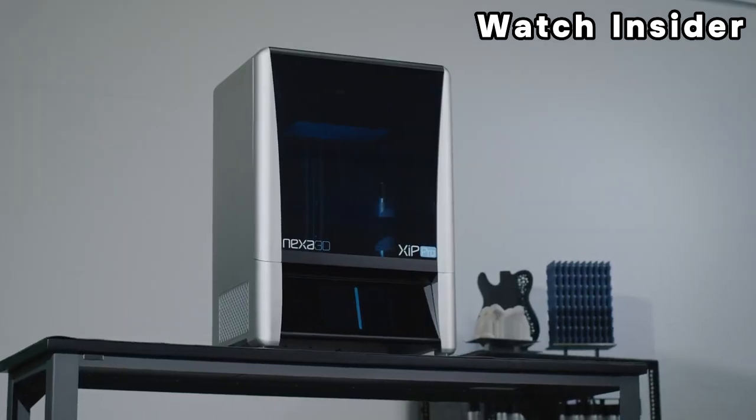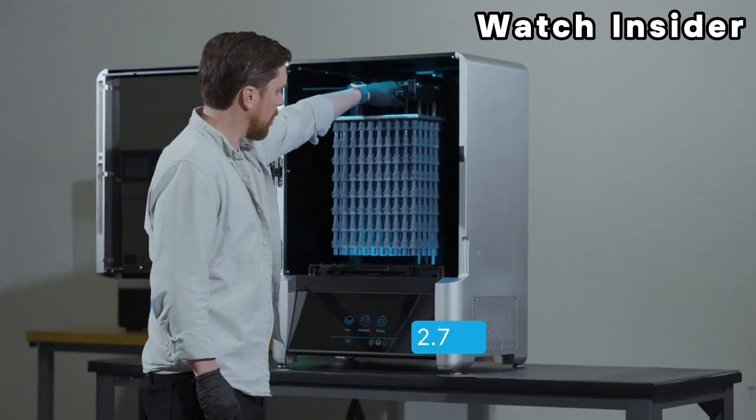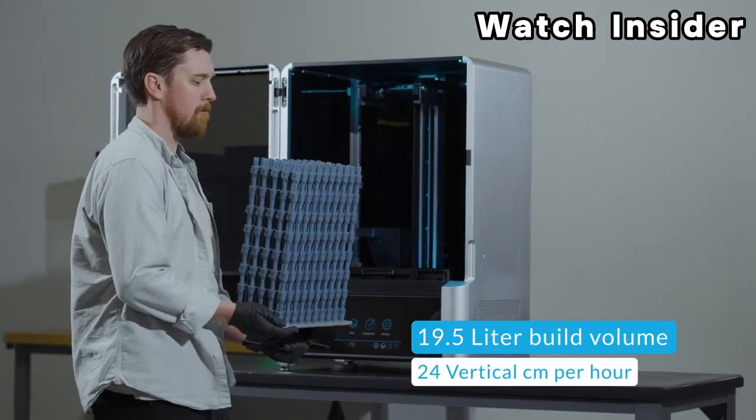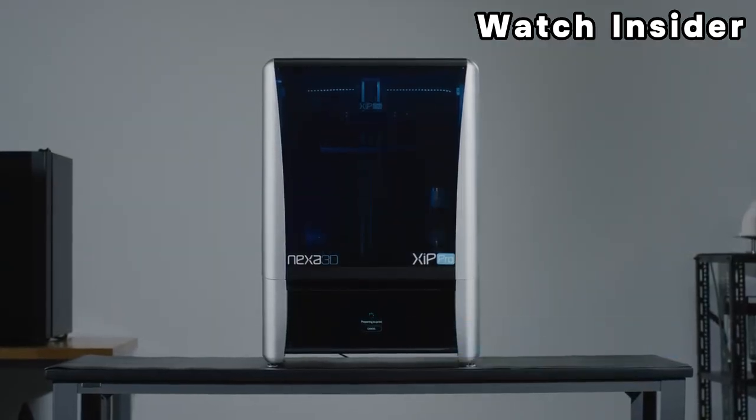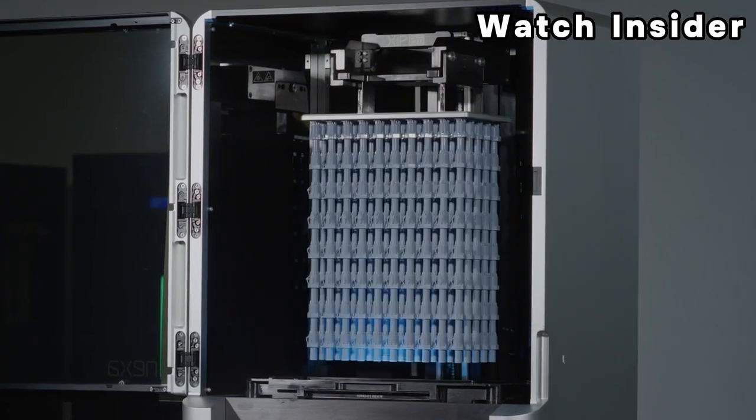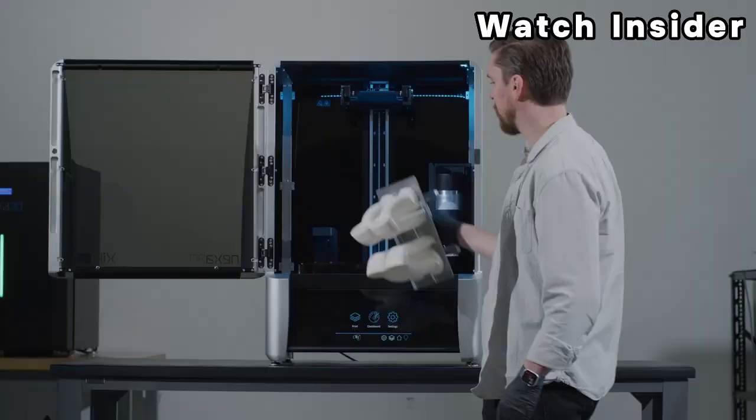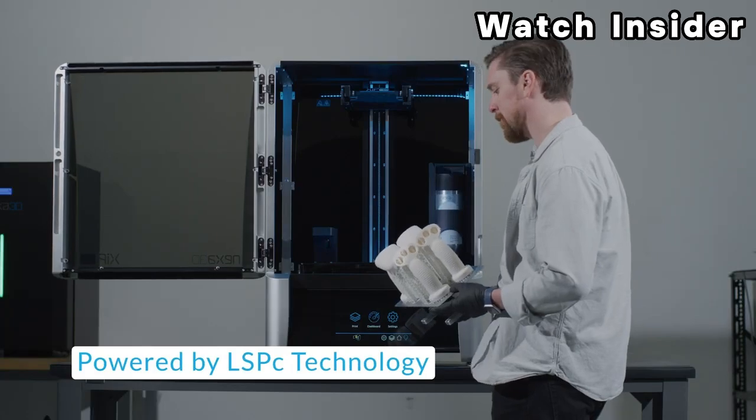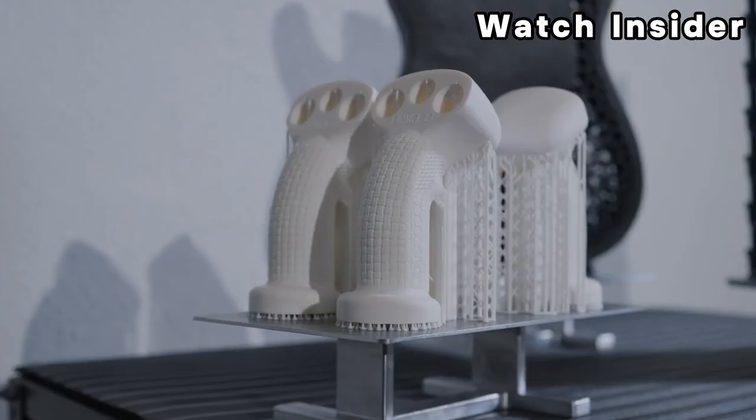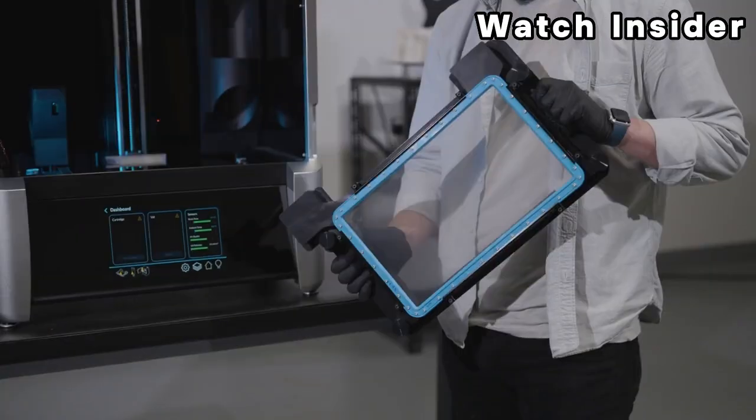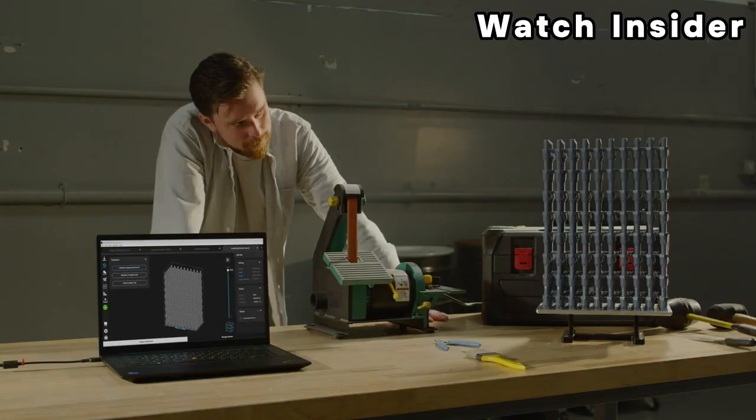These printers typically provide high-resolution printing, ensuring that intricate details and complex geometries are faithfully reproduced. Industrial 3D printers are designed to work with a wide range of materials beyond standard plastics, including engineering-grade thermoplastics, composites, metals, ceramics, and more. Given their intended use in industrial settings, these printers are typically built with sturdy materials and designed for reliability and longevity.